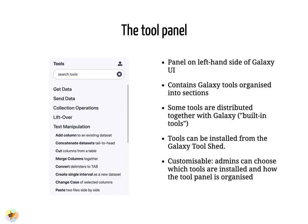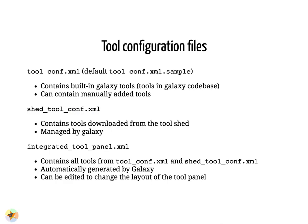The contents and layout of the tool panel are customisable. They are defined by configuration files, and Galaxy knows about its tools based on what's in these files. The tool_conf file contains Galaxy built-in tools and manually added tools. The shed_tool_conf file is managed by Galaxy and contains all tools installed from the tool shed. The integrated tool panel file contains all tools from the first two files and can be edited to change the layout — for example, rearranging tool sections in a different order.